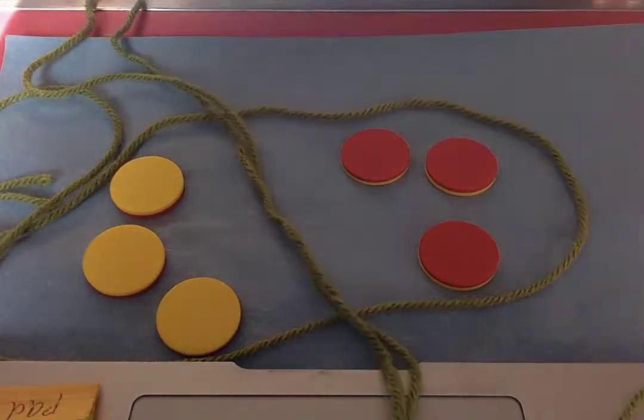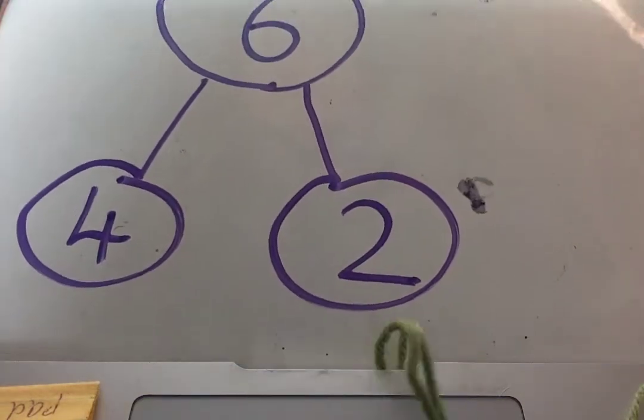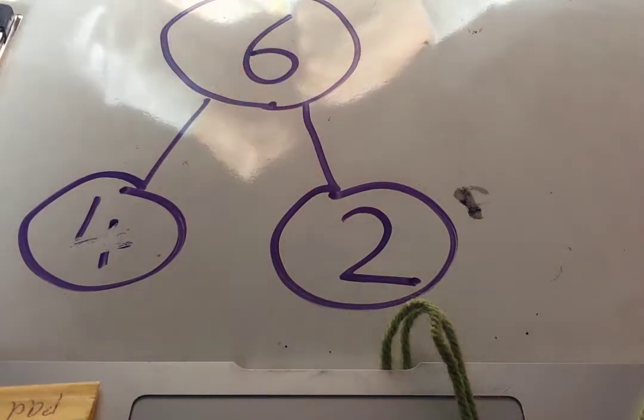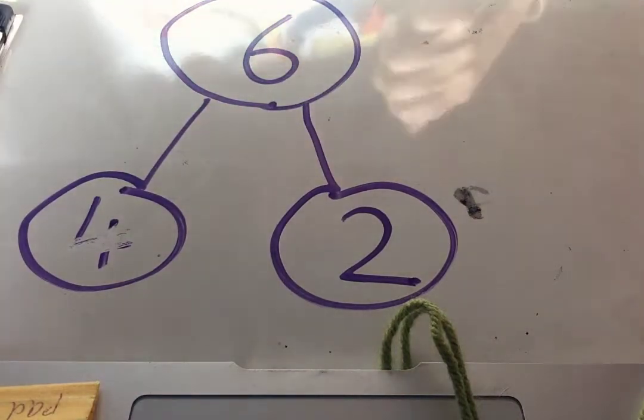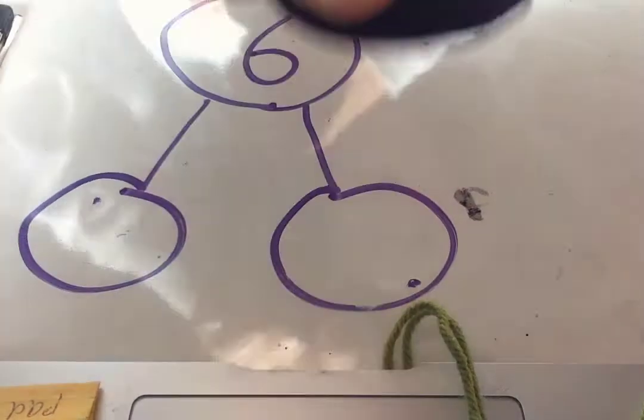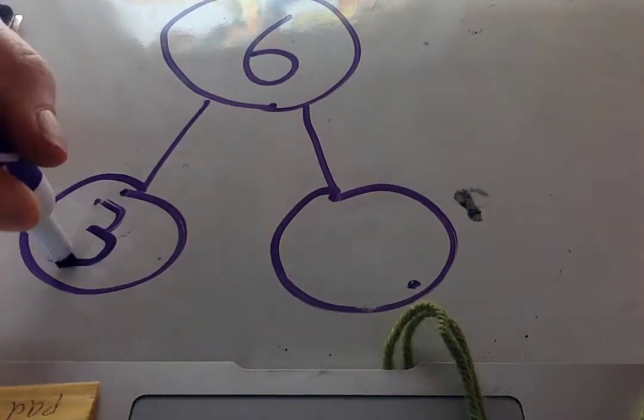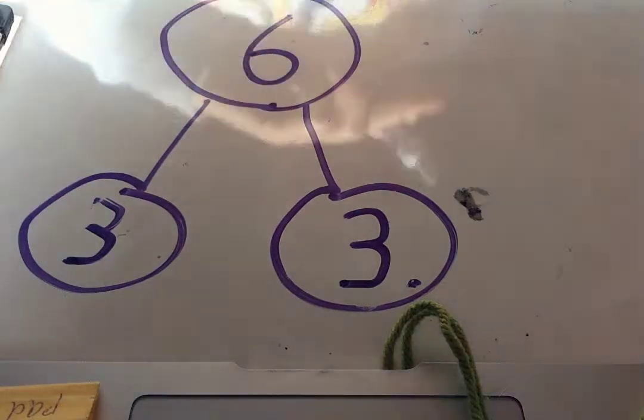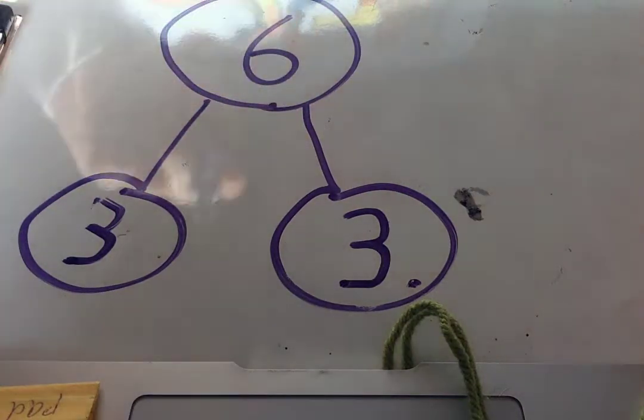But now the parts are three and three. So I can show that in a number bond. I have six, and the parts are three red and three yellow. That's a number bond for six. Three and three.